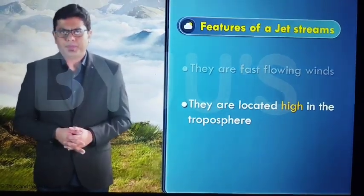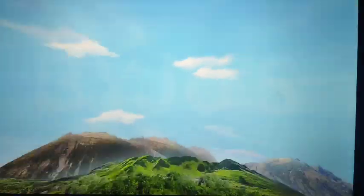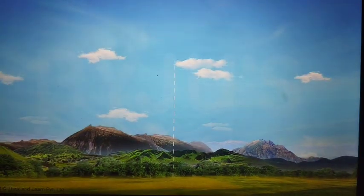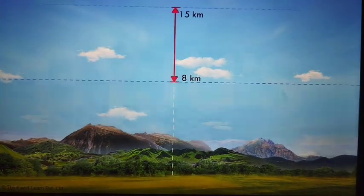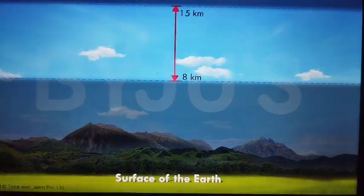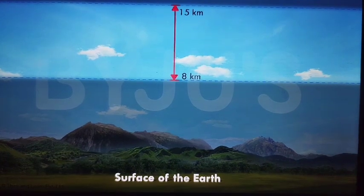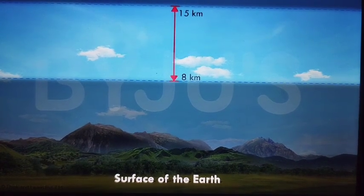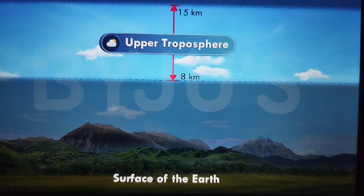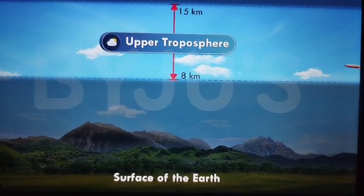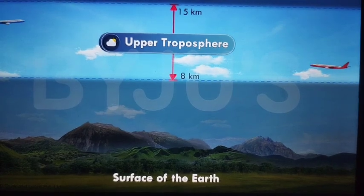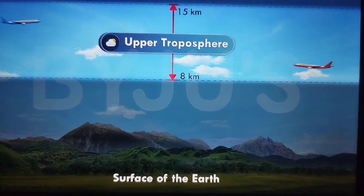So how high? The height ranges somewhere between 8 to 15 kilometers above the surface of the Earth. We can say that it is around the region of the upper troposphere. And yes, this is almost the same height at which most aeroplanes fly.